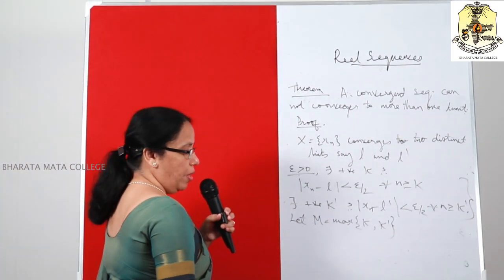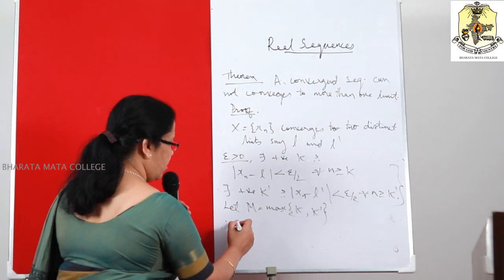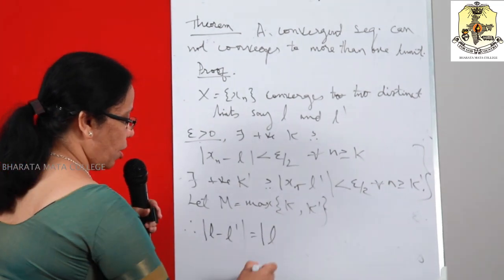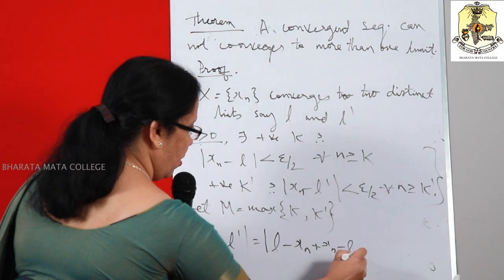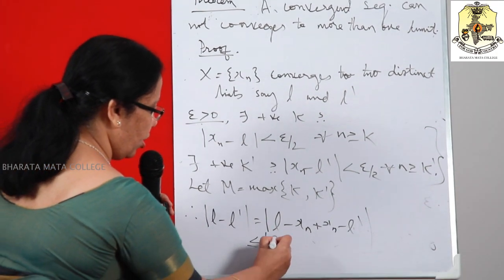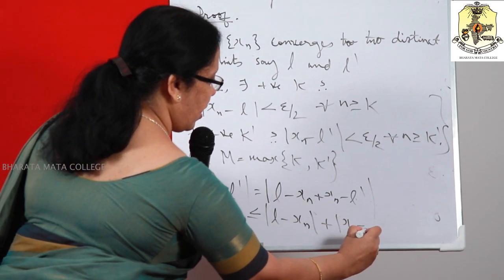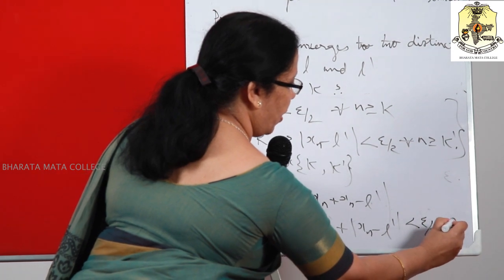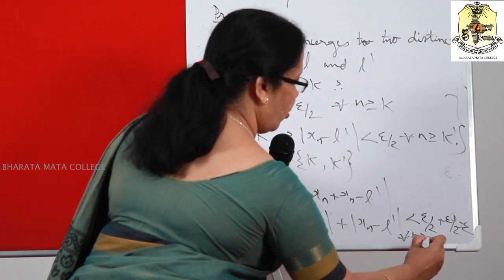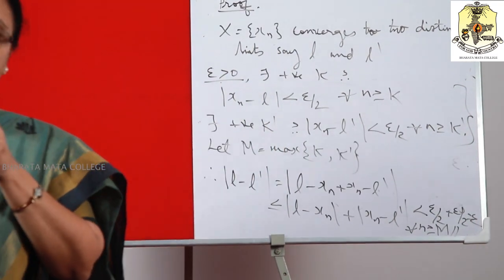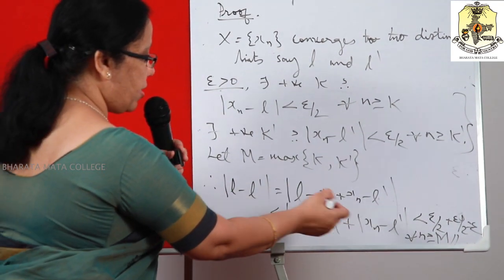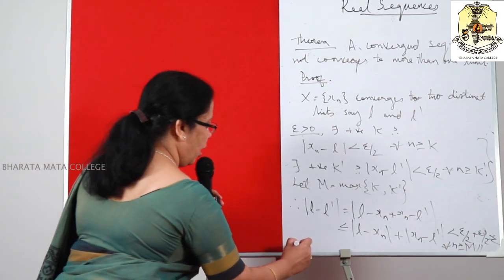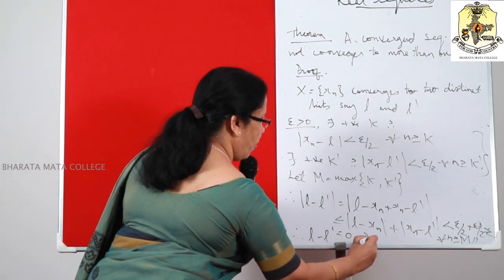Therefore, consider modulus of L minus L dash. This equals modulus of (L minus X_N) + (X_N minus L dash) — adding and subtracting X_N. By the triangle inequality, this is less than or equal to modulus of (L minus X_N) plus modulus of (X_N minus L dash), which is less than epsilon/2 plus epsilon/2, which equals epsilon. It is true for all N ≥ M. So we get modulus of L minus L dash is less than epsilon. Since epsilon is arbitrary, L minus L dash equals zero, implying L equals L dash, which is a contradiction because we assumed L and L dash are distinct.